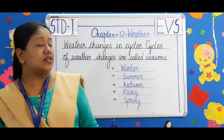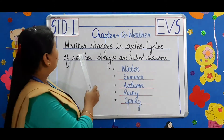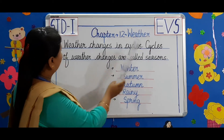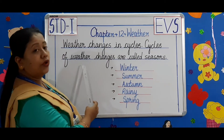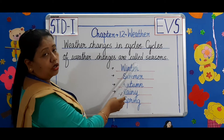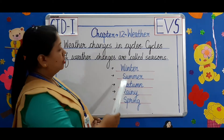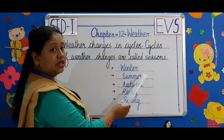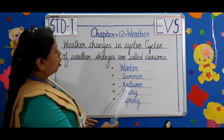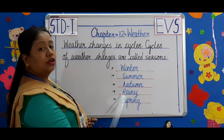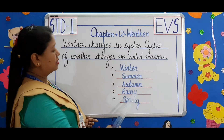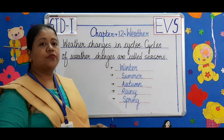What are seasons? Weather changes in cycles. Cycles of weather changes are called seasons. There are five seasons: winter season, summer season, autumn season, rainy season, and spring season.